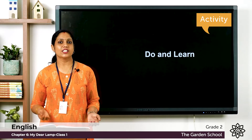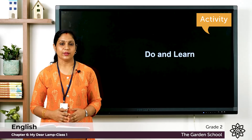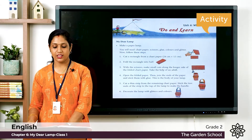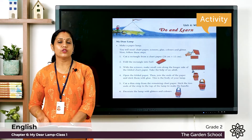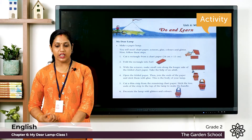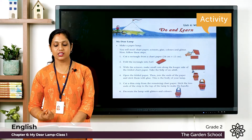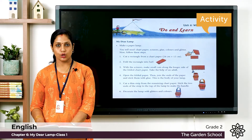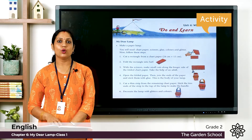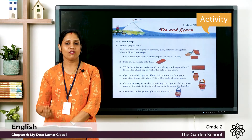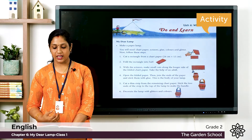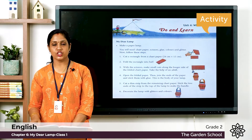You can open your textbook to page number 79. Let's read: 'Make a Paper Lamp.' This is an activity of making a paper lamp. You will need chart paper, scissors, glue, colors, and glitter. Now let's see what the steps are for making a paper lamp.